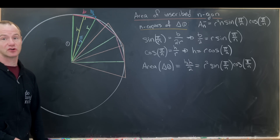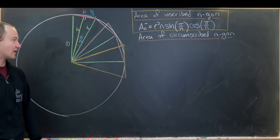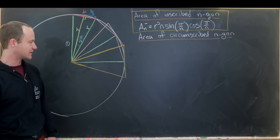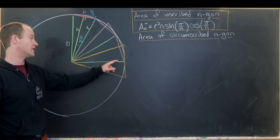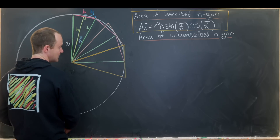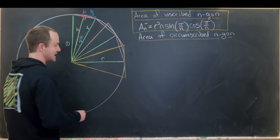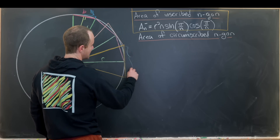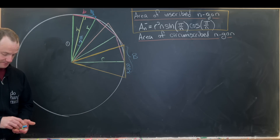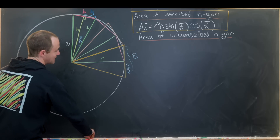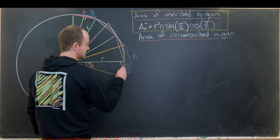Now let's calculate the area of the circumscribed n-gon using a similar strategy. Going from the center to the edge of the circle is a distance of the radius, and that serves as the height for triangles in our circumscribed n-gon. All that's left is to calculate the base. The angle here is exactly the same as before by the same argument, and there's a right angle at the edge.